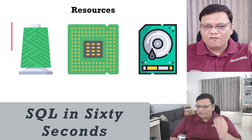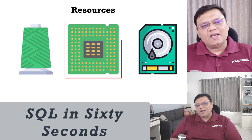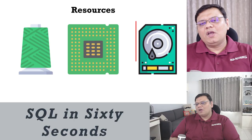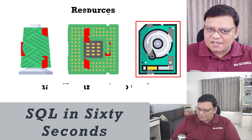Let's see the screen with three important resources. The first one is thread, the second one is CPU, and the third one is disk.